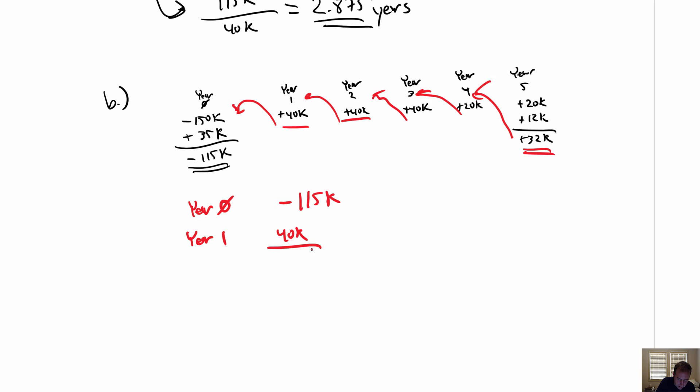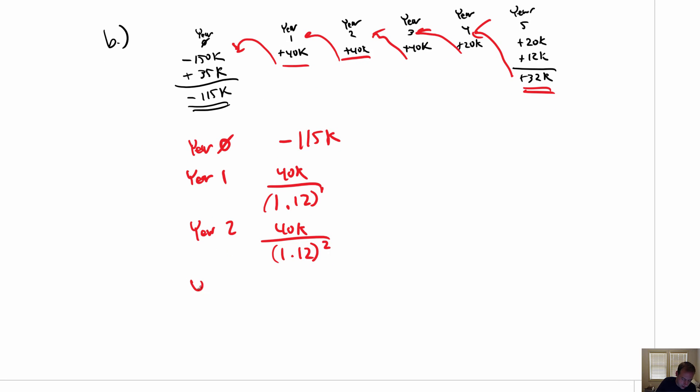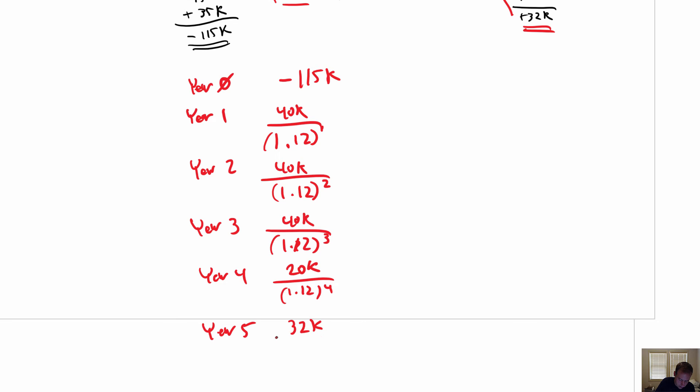Year one, I just take $40,000. I divide by one plus the interest rate. So it's 12%. So 1.12 raised to the power of one because it's one year deep. Year two, it's $40,000 divided by 1.12 raised to the power of two. Year three, year four, $40,000 divided by 1.12 raised to the power of three. Year four, $20,000 raised to the power of four. And year five is $32,000 divided by 1.12 to the fifth power. And these are all positive cash flows. Our first one was a negative cash flow. So that's it. And then we're just going to add them all up and see if this is positive or negative.